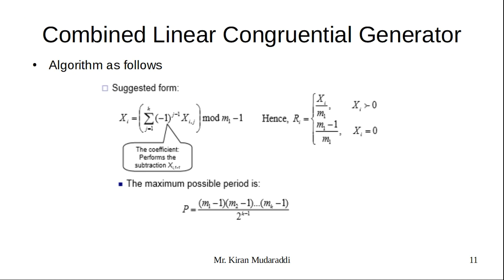For this we need to use the formulas: Xi = (Σ(j=1 to k) (-1)^(j-1) * Xij) mod (m1-1), and Ri = Xi/m1 if Xi > 0, or (m1-1)/m1 when Xi = 0. P is the maximum possible period. I will take you to an example so you come to understand what is combined linear congruential generator.